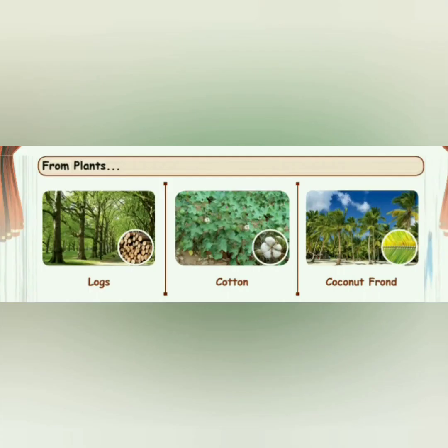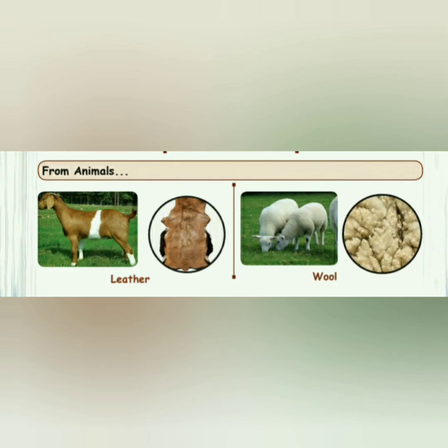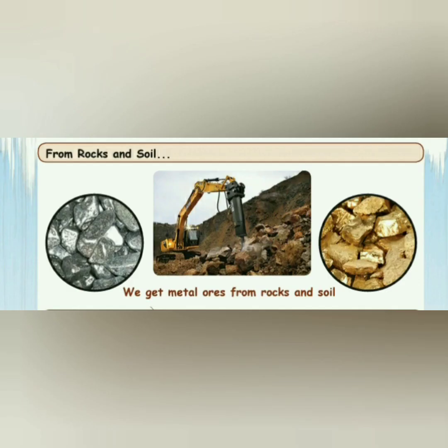We can get materials from different sources like plants, animals, and nature. Plants give us materials like logs, cotton, and coconut. We also get different kinds of materials from animals like leather and wool. Apart from plants and animals, we get different kinds of materials from nature.